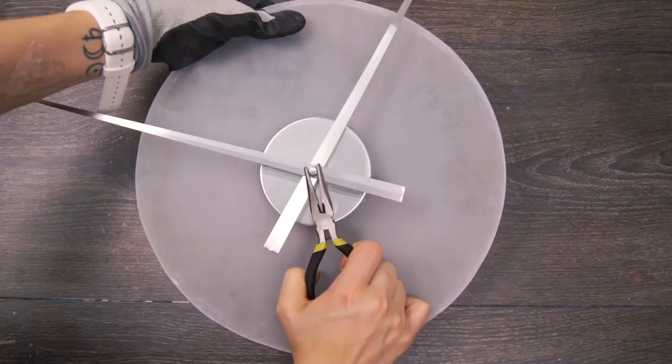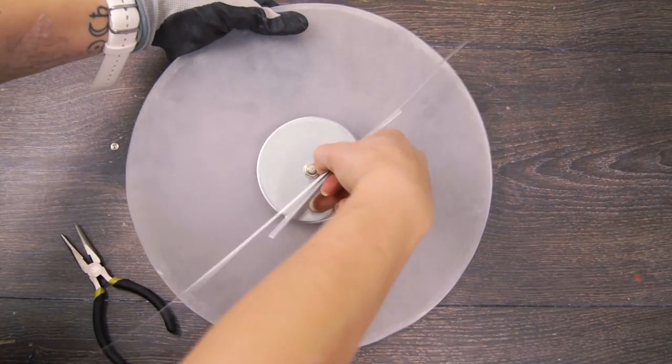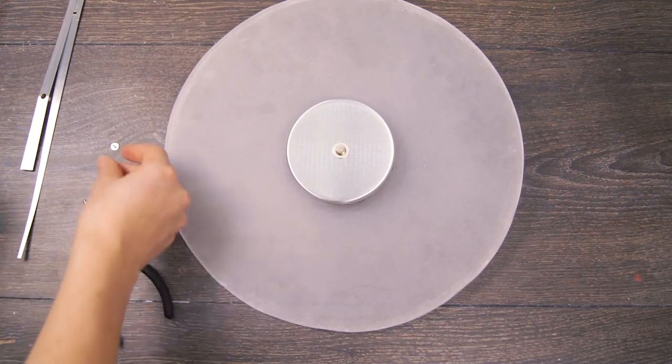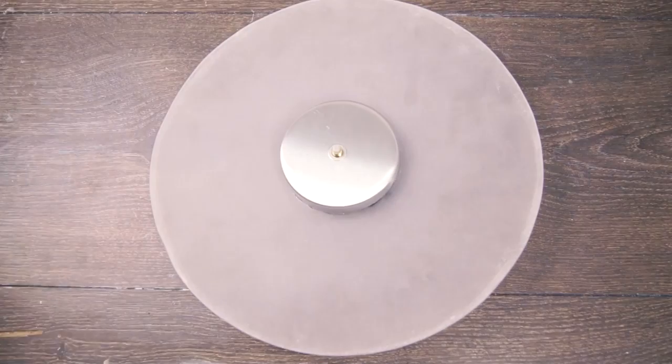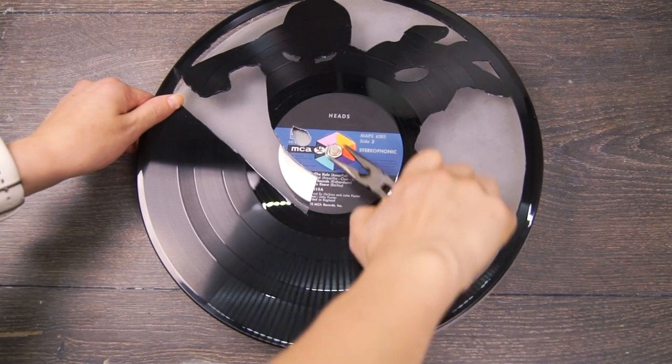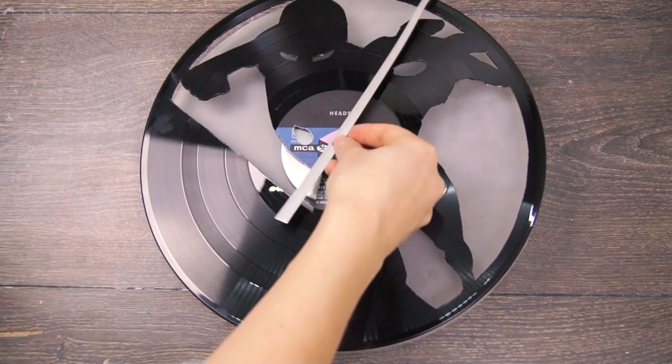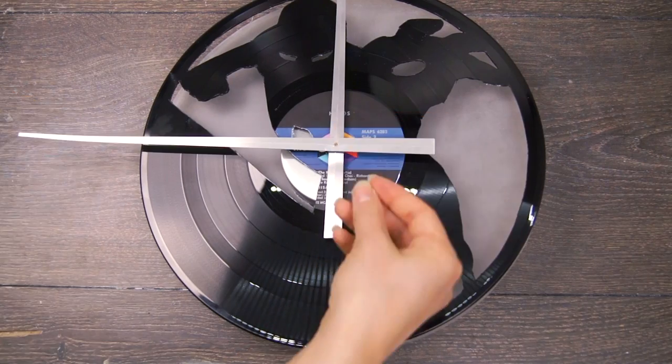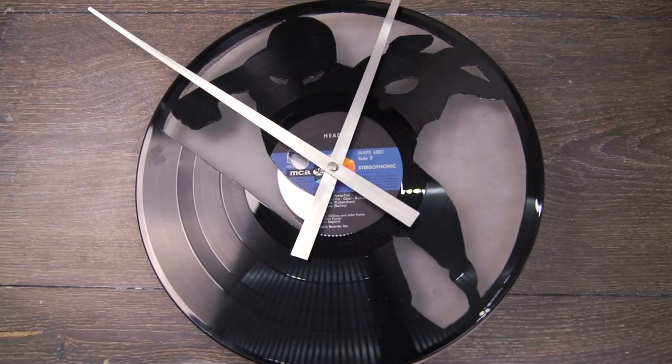We gotta be a little careful here while disassembling this as we don't want to break anything now. Alright, we're good. What's awesome about this clock is that there's nuts at the bottom here that will hold the record in place. This makes it possible to switch between the designs we made earlier. If that ain't cool then I don't know what is.